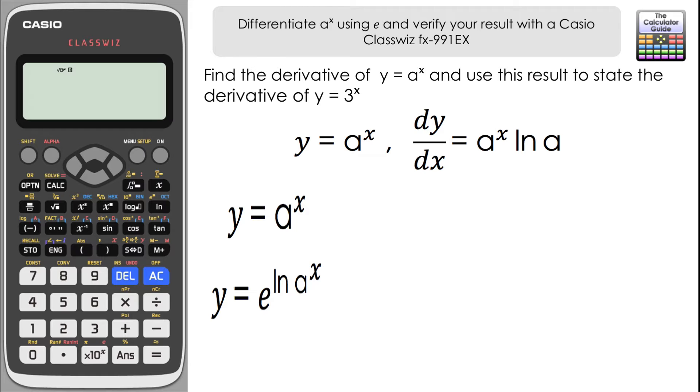We're just going to change the form of what we have here slightly. Now looking in the actual index of e, we have ln a to the power of x. Now using your laws of logarithms, we should know that if we have a power in the argument of a logarithm, what we can do is bring that power down to the front and multiply. So we can rewrite this statement as y equals e to the x ln a. That's just using a law of logarithms there.